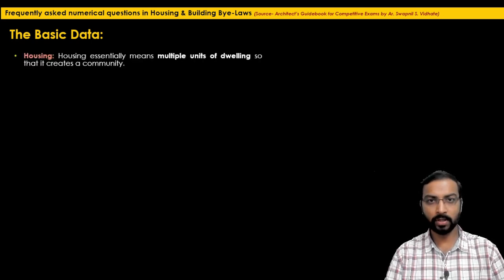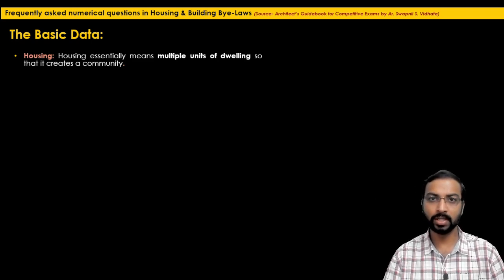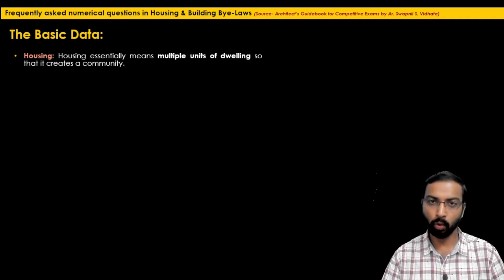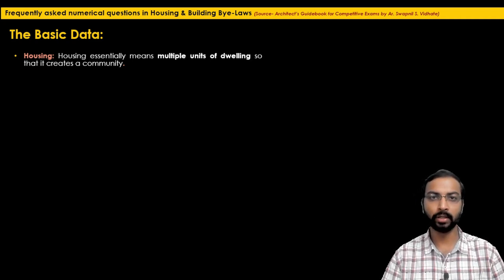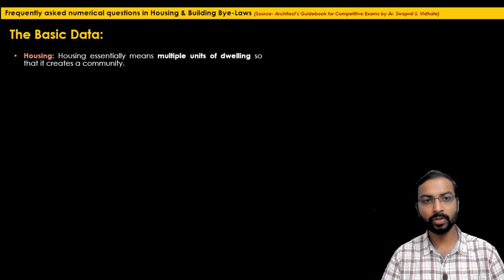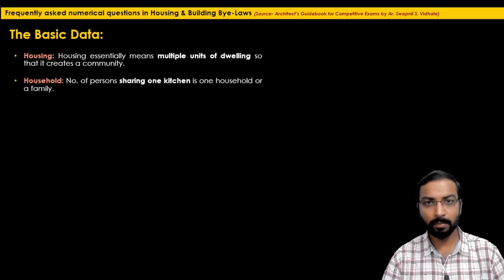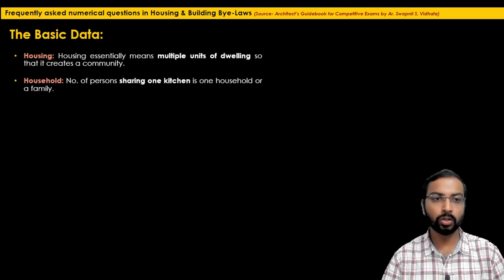The first basic definition is housing. Many of us consider housing as one single house, but housing is not a noun — it is a social term. Housing essentially means multiple units of dwelling units; more than one dwelling unit together is called housing. So it creates a community, and that is what we call housing.